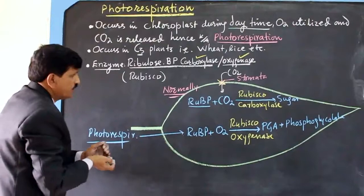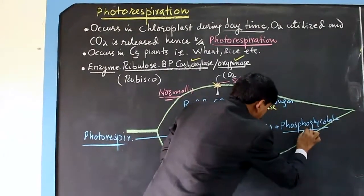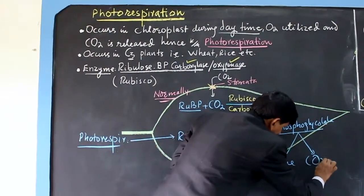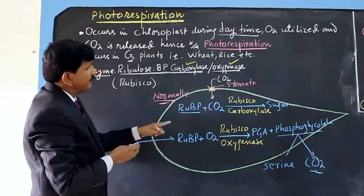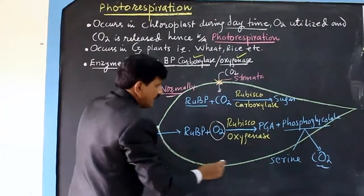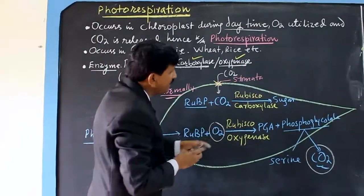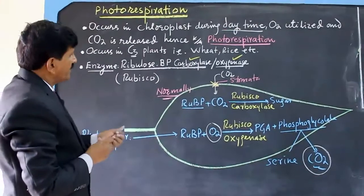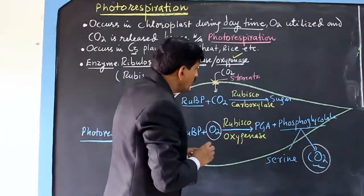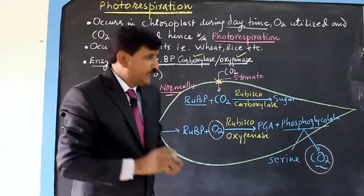This process is called photorespiration, in which oxygen is utilized. The phosphoglycolate then breaks down into amino acid serine and carbon dioxide. This process is wasteful — it is a useless process because energy is not produced, and the ribulose bisphosphate is consumed, reducing photosynthetic output.